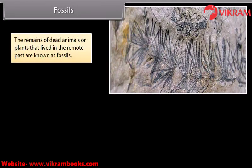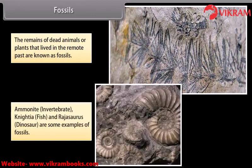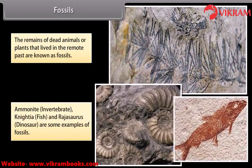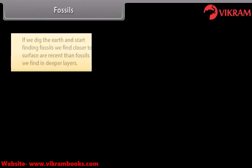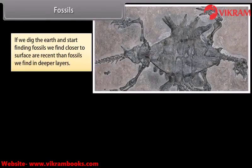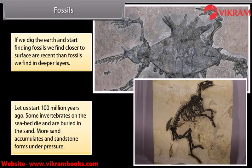Fossils are the remains of dead animals or plants that lived in the remote past. Examples include Ammonite invertebrate, Nicaea fish, and Rajasaurus dinosaur. Fossils found closer to the surface are more recent than those found in deeper layers. Starting 100 million years ago, some invertebrates on the seabed died and were buried in sand, and more sand accumulated forming sandstone under pressure.